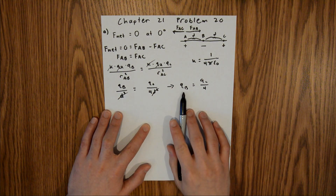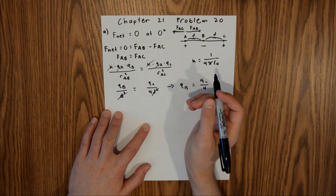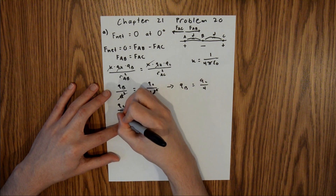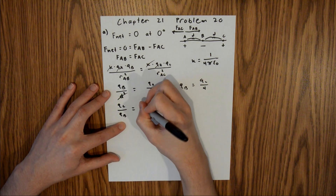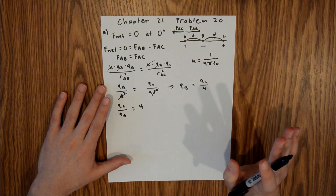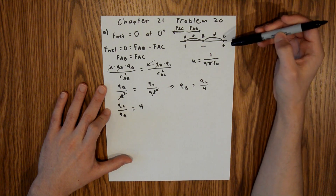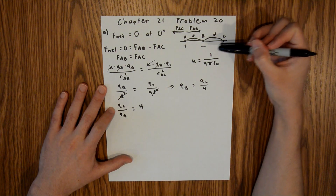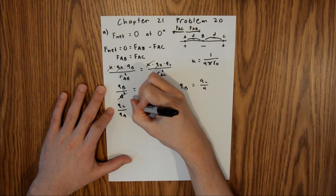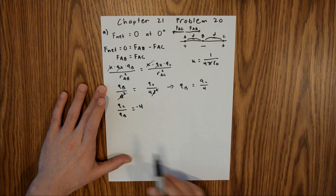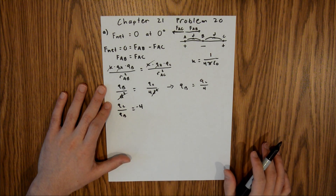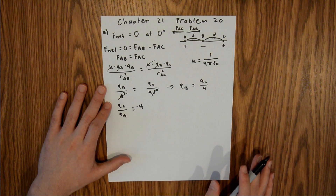Dividing both sides by QB and multiplying both sides by 4, we find that QC divided by QB equals 4. However, we need to check the sign. QC is a positive charge and QB is a negative charge, meaning this must be negative 4. So QC over QB equals negative 4 for Part A, and that is your final answer for that part.